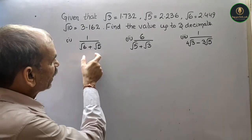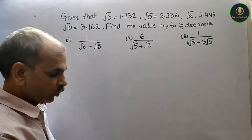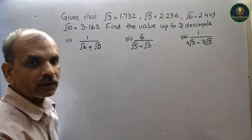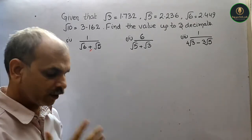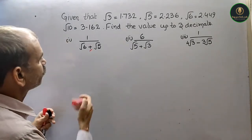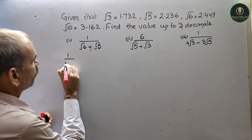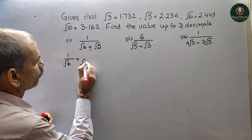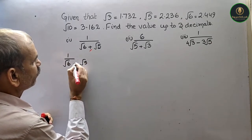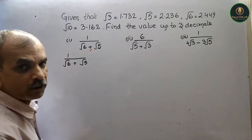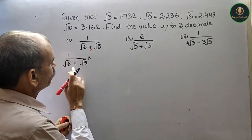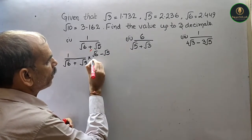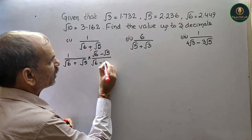Now, first हम क्या करेंगे, rationalize करेंगे denominator को. तो यहाँ पर plus है, तो हम minus के साथ multiply and divide करेंगे. It will come as 1 by root 6 plus root 5, into root 6 minus root 5, by root 6 minus root 5.